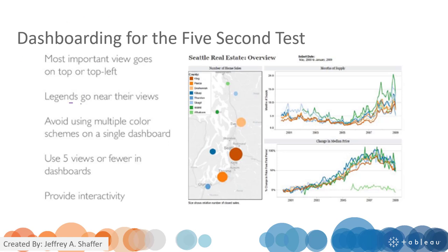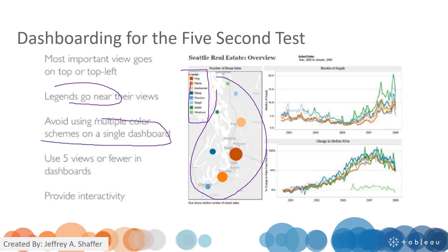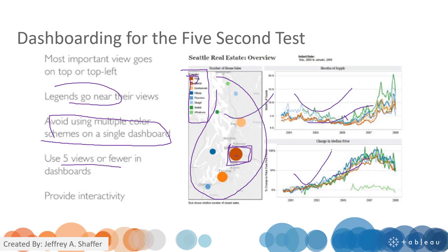Do not use multiple color schemes on a single dashboard — colors should be consistent. For the same type of data, use the same color: for example, a location shown in brown on the map should also use brown on the line chart. Use five or fewer views — in this case there are only three views. Also provide interactivity by using filters, highlights, and actions available in Tableau.